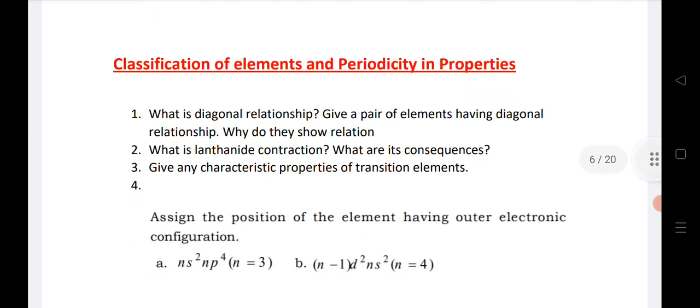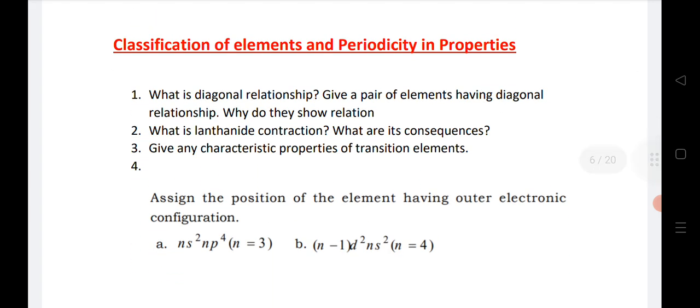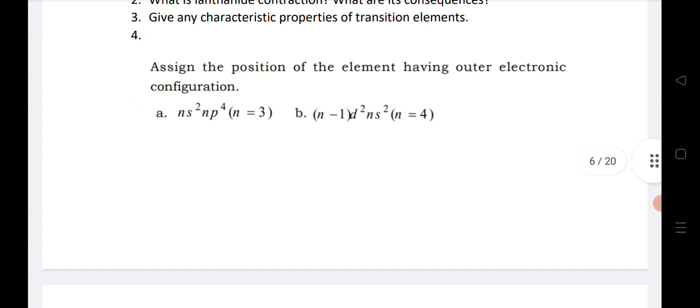Periodic classification of elements and periodicity in property: diagonal relationship, lanthanide contraction, transition element, and assign the position of element having outermost electronic configuration. These four are very important questions.